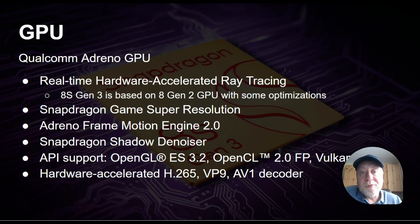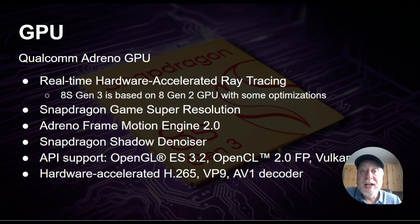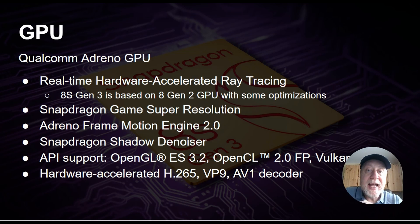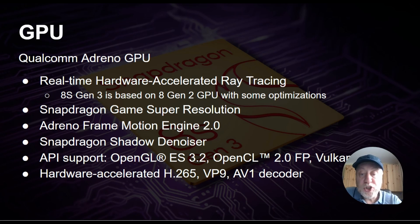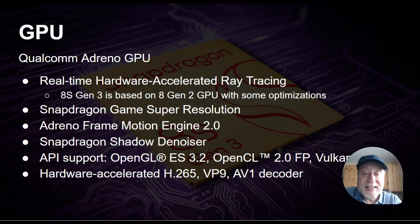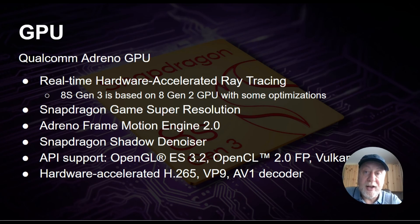What about the GPU? Qualcomm no longer gives out names and numbers, so we know it's an Adreno GPU. It's based on the 8 Gen 2 GPU, optimized and tweaked for the 8S Gen 3. It supports various Elite Gaming features like super game resolution, frame motion engine, and shadow denoiser, with a variety of APIs supported. It also has hardware-accelerated decoding for H.265, VP9, and AV1 — so hardware decode for AV1 is included in this chip.